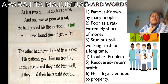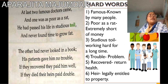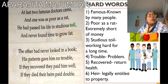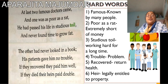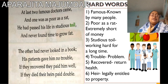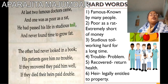Now the next two stanzas. At last two famous doctors came and one was as poor as a rat. He had passed his life in study and never found time to grow fat. The other had never looked in a book. His patients gave him no trouble. If they recovered, they paid him well. If they died, their heirs paid double. If you find any problem with any of these words, please join my live class and ask me.